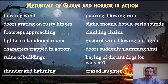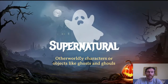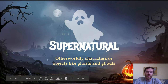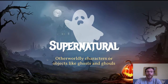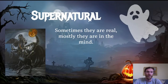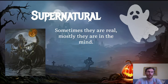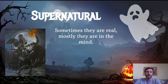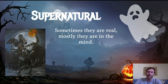The next element is supernatural. Anytime you see otherworldly characters or things like ghosts, goblins, or things that are supernatural, write those down. One caveat: sometimes the supernatural things are real — maybe the story actually has a ghost — but a lot of times they're in the person's mind. Even if we know it's in their mind, if the character thinks it's real, it counts as supernatural.